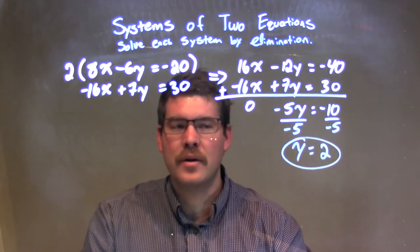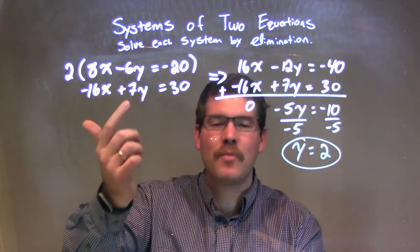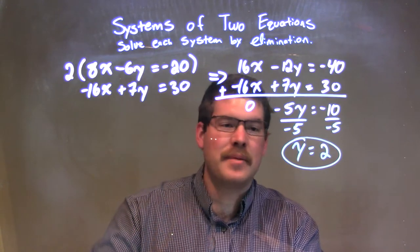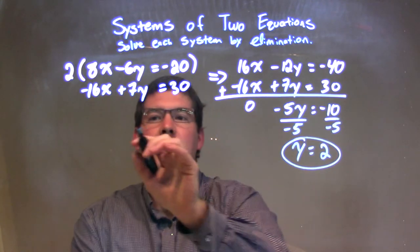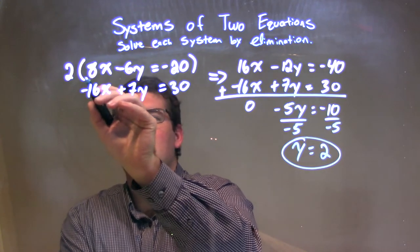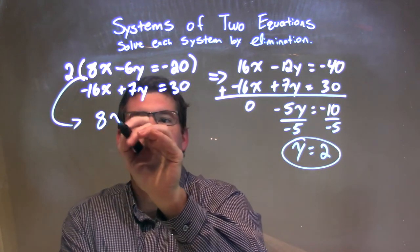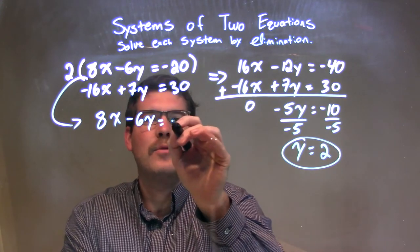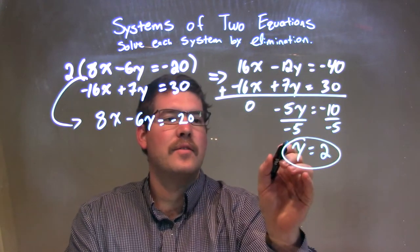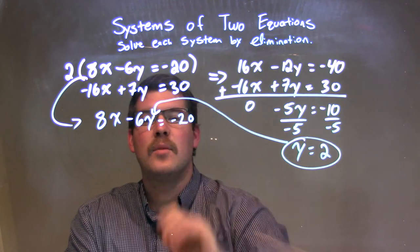So, now what we're going to do is plug that back into one of my equations and simplify. I'm going to pick the first one again. So, I'm going to take that 8x, without the multiply by 2. So, the 8x minus 6y equals negative 20. And I'm going to take this y being 2 and plug it in.